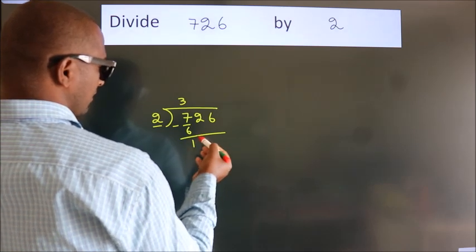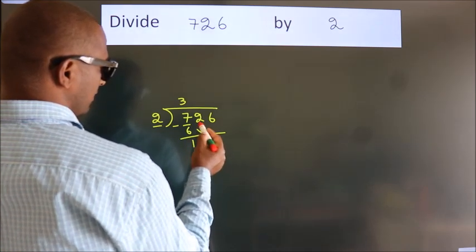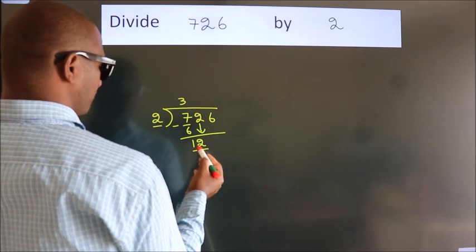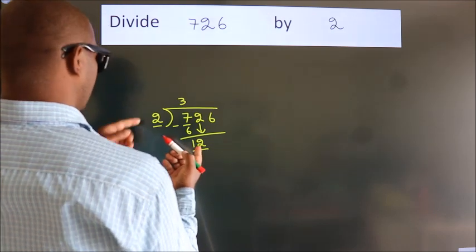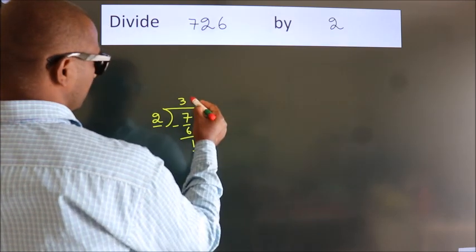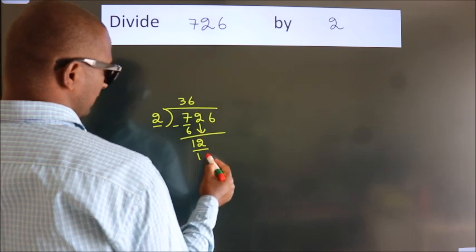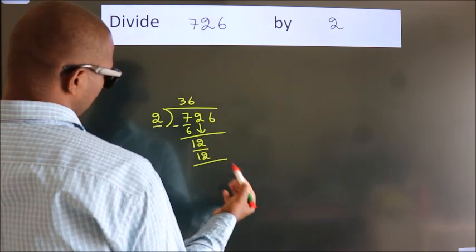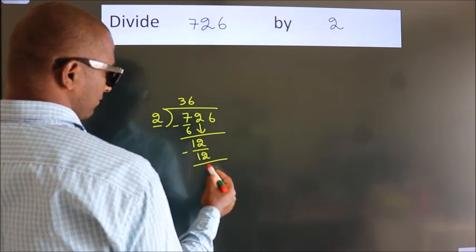After this, bring down the beside number. So, 2 down. So, 12. When do we get 12? In 2 table, 2, 6, 12. Now, we subtract. We get 0.